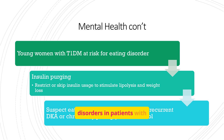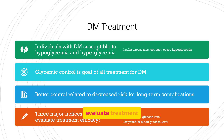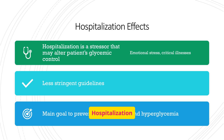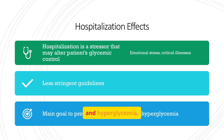Suspect eating disorders in patients with recurrent DKA or chronically poor glycemic control. The goal of all diabetes treatment is glycemic control; better control is related to a decreased risk of long-term complications. Major indices to guide and evaluate treatment efficacy include A1C level, fasting blood glucose level, and postprandial blood glucose level. Hospitalization can alter a patient's glycemic control due to stress and critical illnesses, with the main goal being to prevent both hypoglycemia and hyperglycemia.